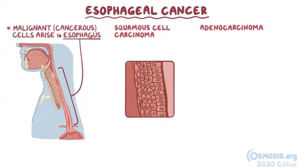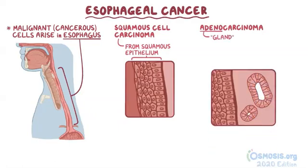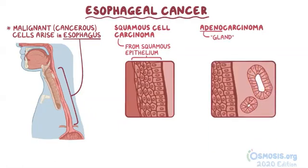Squamous cell carcinoma arises from squamous epithelium. On the other hand, adeno means gland, so adenocarcinoma arises from columnar glandular epithelium.